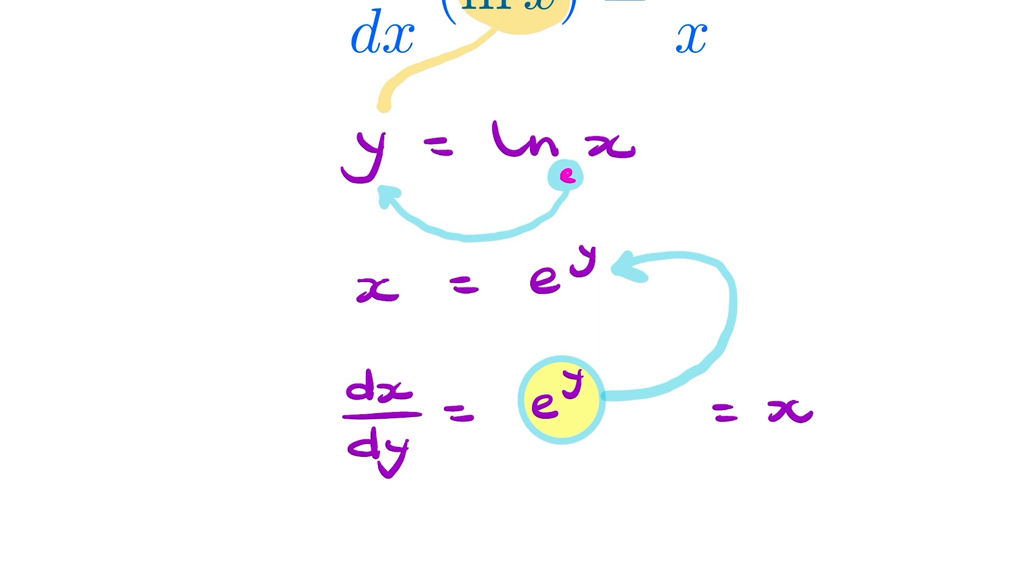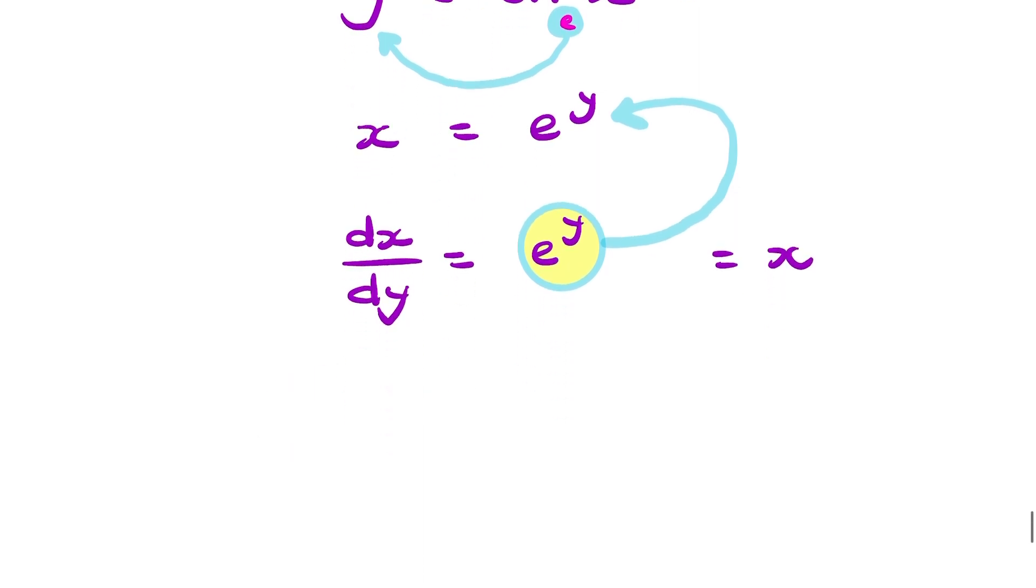And what we want is dy by dx, which is the reciprocal of that. So you can rewrite that as dy over dx. I've essentially flipped that. So you take the reciprocal of x and that will give you 1 over x.